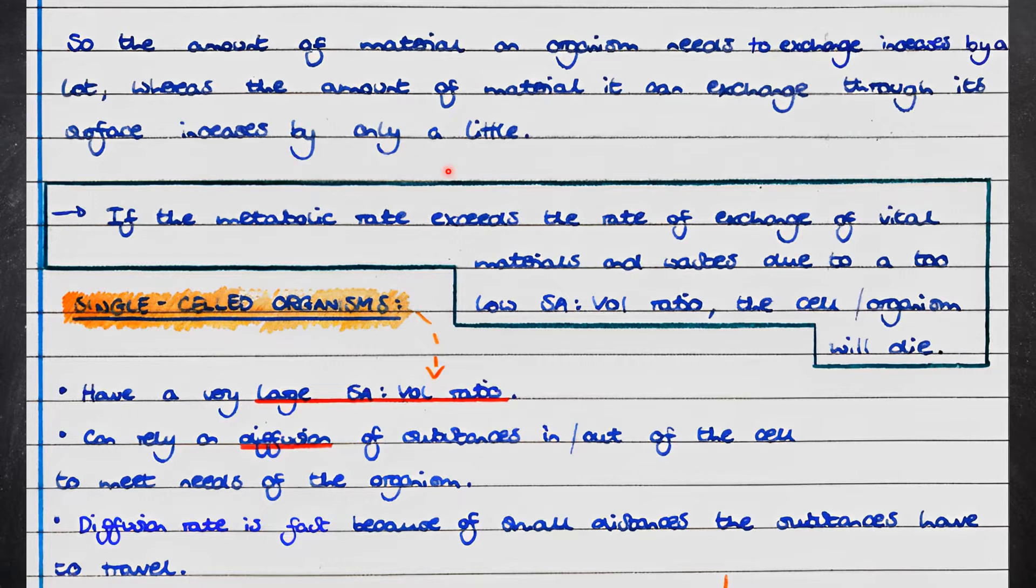If the metabolic rate exceeds the rate of exchange of vital materials and wastes due to a too low surface area to volume ratio, then the organism will die.